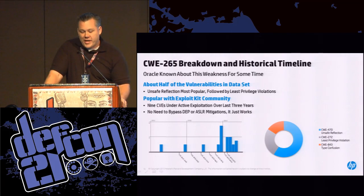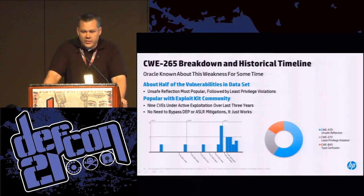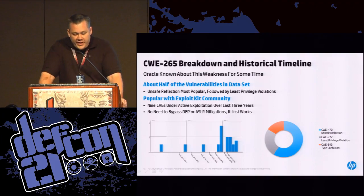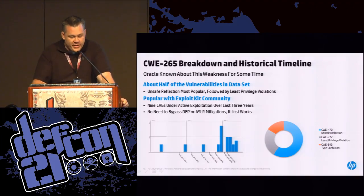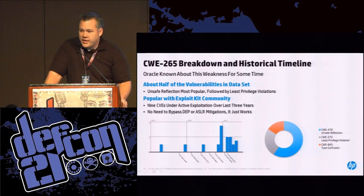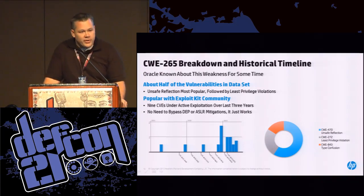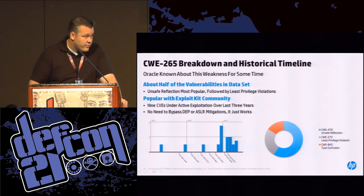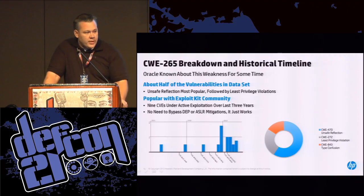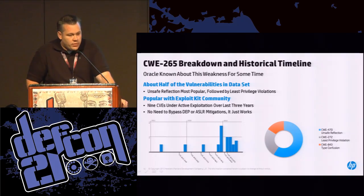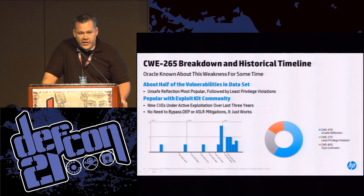Looking specifically at sandbox bypass issues: those accounted for half of the vulnerabilities in our data set. Looking at the breakdown, unsafe reflection vulnerability accounted for half of those, followed by least privilege violation which accounted for a quarter. These are really popular in the exploit kit community because you don't have to bypass any OS mitigations — they just work. You don't have to bypass DEP or ASLR. Every time you click on it, a calculator pops up. On the timeline, we've been receiving sandbox bypass submissions into ZDI since early 2011 and late 2010, so Oracle has actually known about these issues for some time.